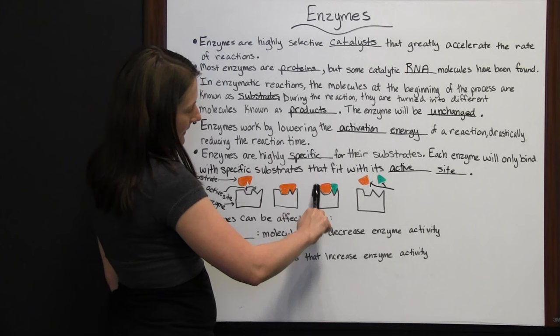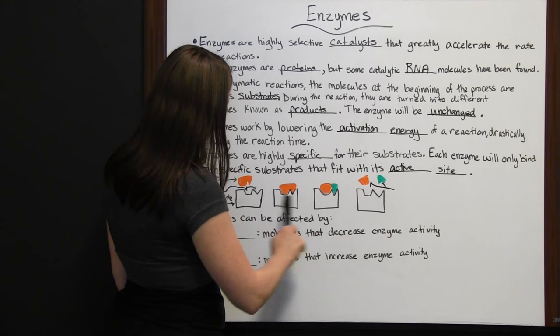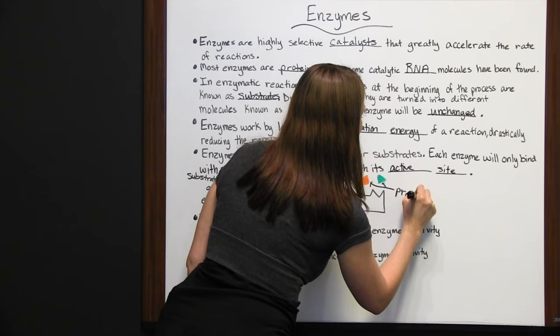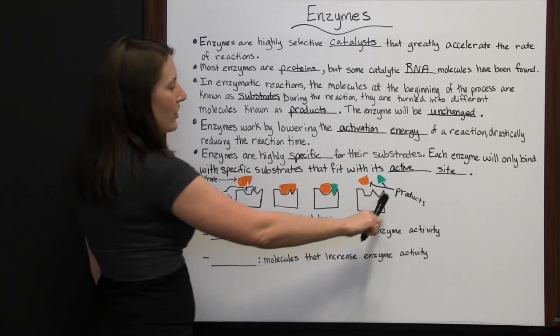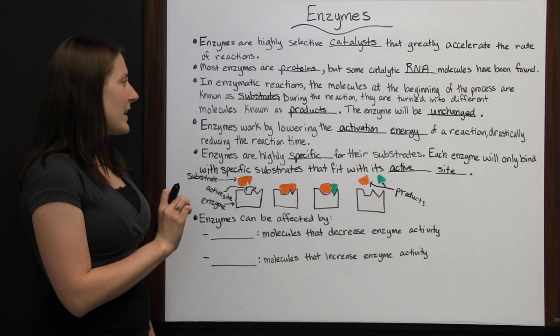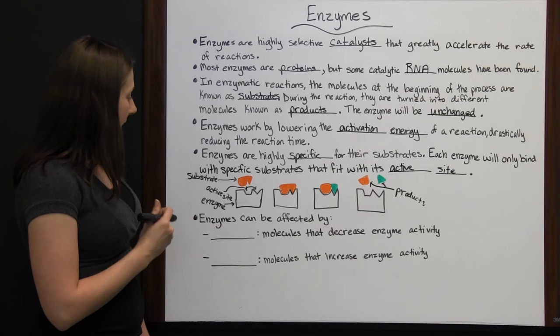You can see the enzyme changed shape slightly to bind to the substrate. In the next phase, you have the enzyme-product complex, where the substrate starts to turn into two different molecules. Finally, the enzyme remains unchanged and the products — two separate molecules the substrate was turned into — leave the enzyme. This process lowers the activation energy of the reaction.